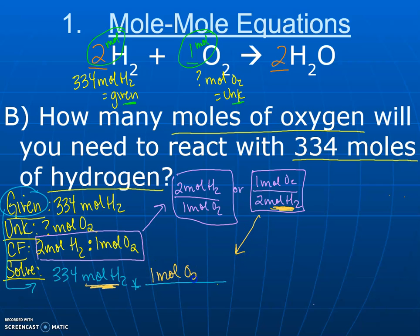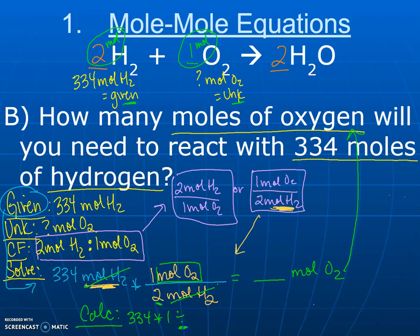Go grab your calculator. If you don't know how to solve it, you do 334 multiplied by one, and then if it's in the denominator, you divide it: divided by two. And the answer when you hit enter is 167 moles of O2.